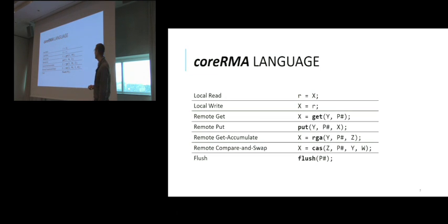While evaluating how well our model captures the RMA behaviors, we identify contradictions between the existing documentation of RMA libraries and the actual behaviors of networks. The first part is to introduce this coreRMA model. For us, we identify seven types of statements: local read and local write, remote get and put statement, remote get accumulate, remote compare and swap, and flush statements.